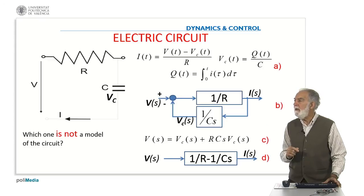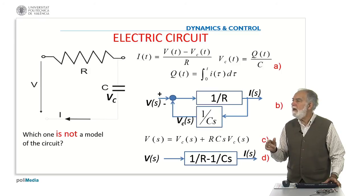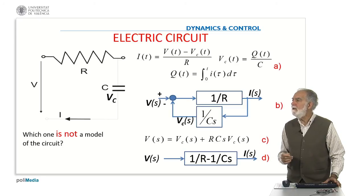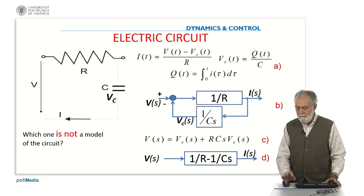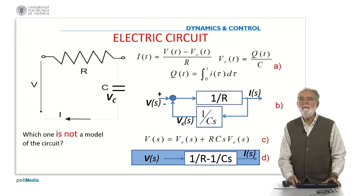But the fourth one really is not correct because it's very simplified and incorrect. It's just the difference between one over R and one over CS and this is not correct. It's not a model of the circuit. So the proper answer is D is not a model of the circuit.